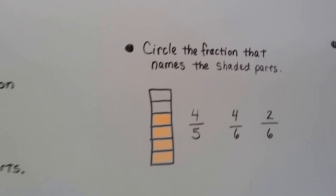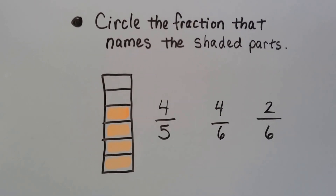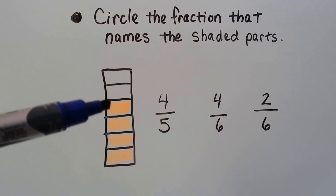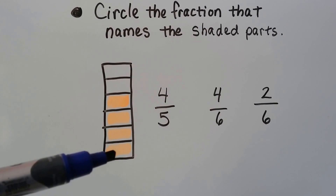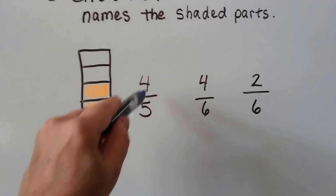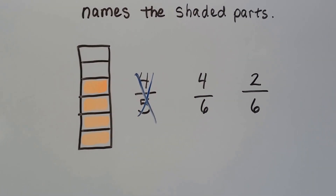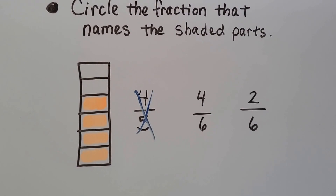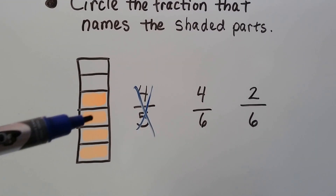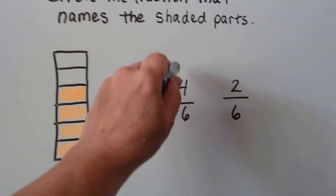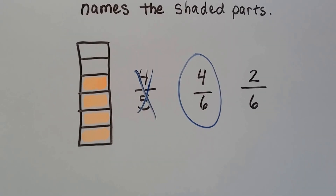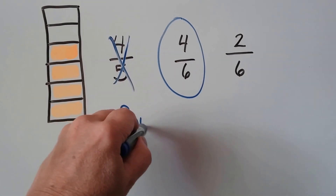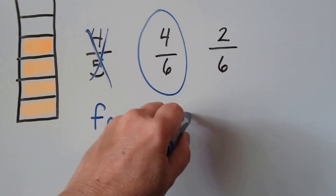Let's circle the fraction that names the shaded part. The first thing we need to do is count how many equal parts there are: one, two, three, four, five, six equal parts. So that tells me right away this can't be an answer because it's got a five for the equal parts — it's got six equal parts, so it's one of these. Which ones are shaded? One, two, three, four are shaded. So our answer would be this one — four sixths. We'd write it like this: four sixths.